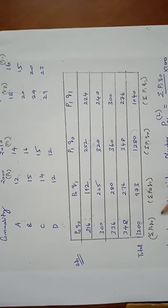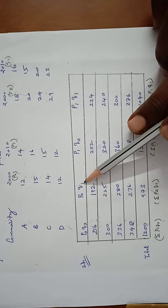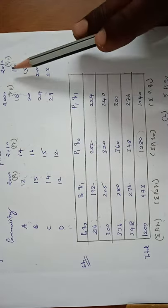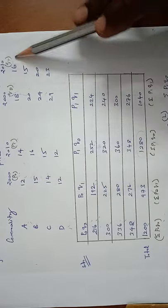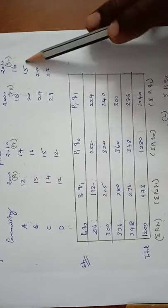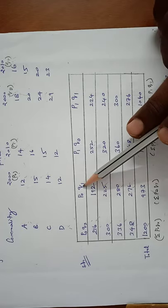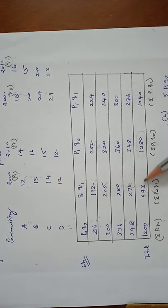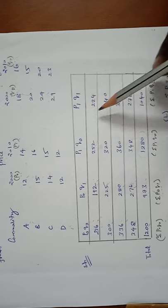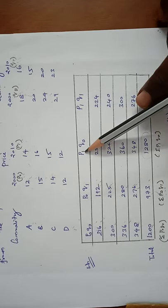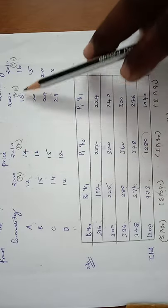This is sigma P1Q0. Next, P0 into Q1: 12 into 16 is 192, 15 into 15 is 225, 280, 276. Adding all the values: 973. This is sigma P0Q1. Next column, P1Q1.